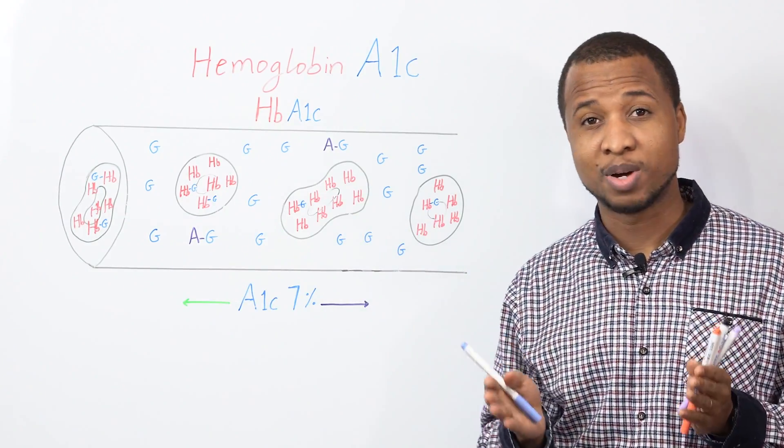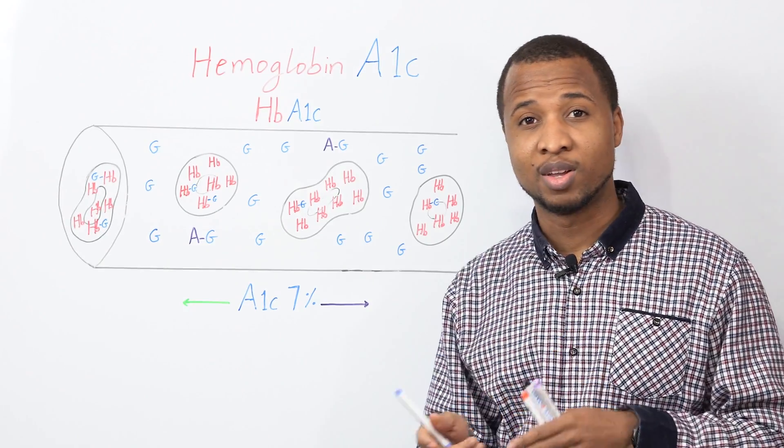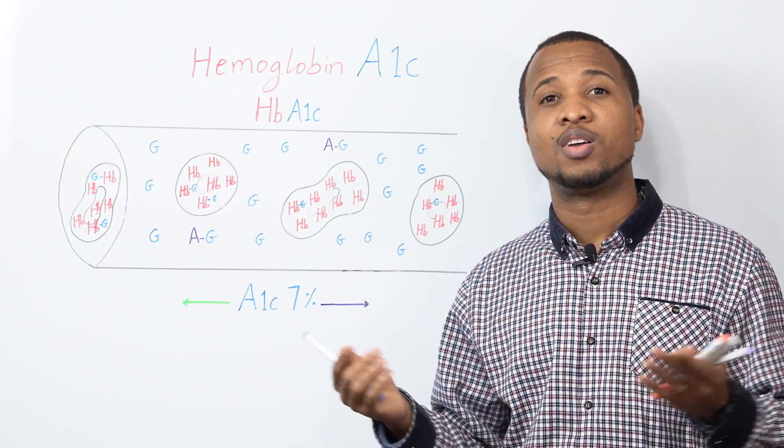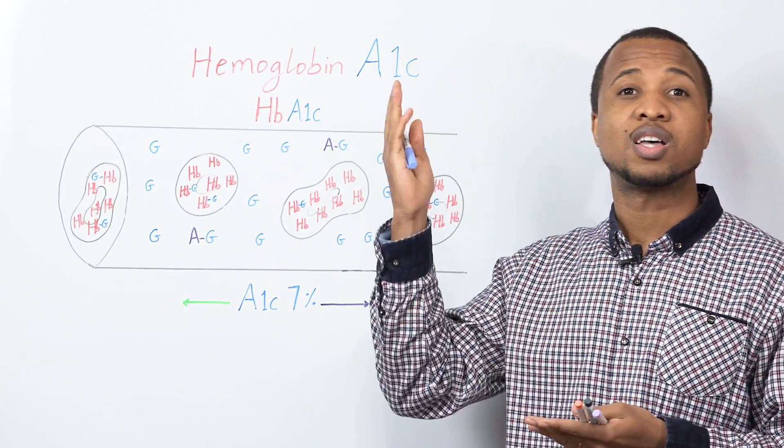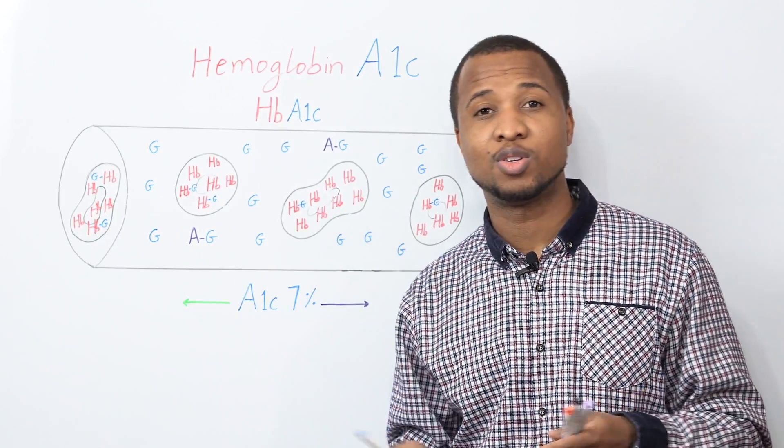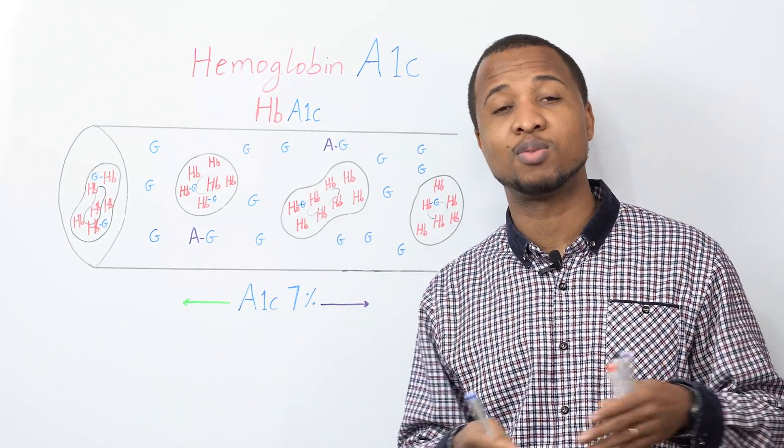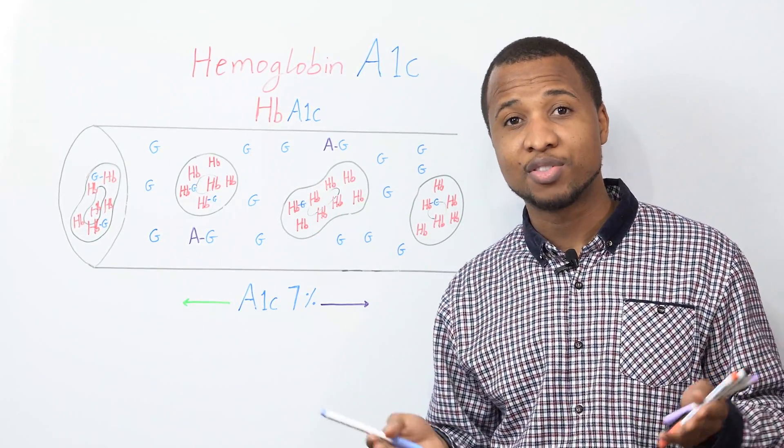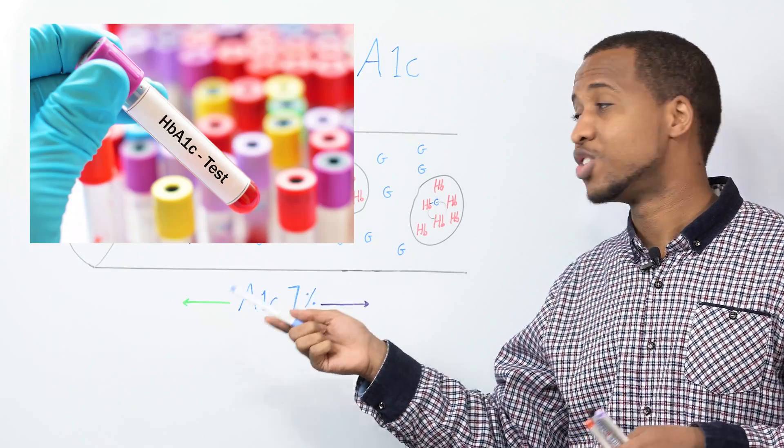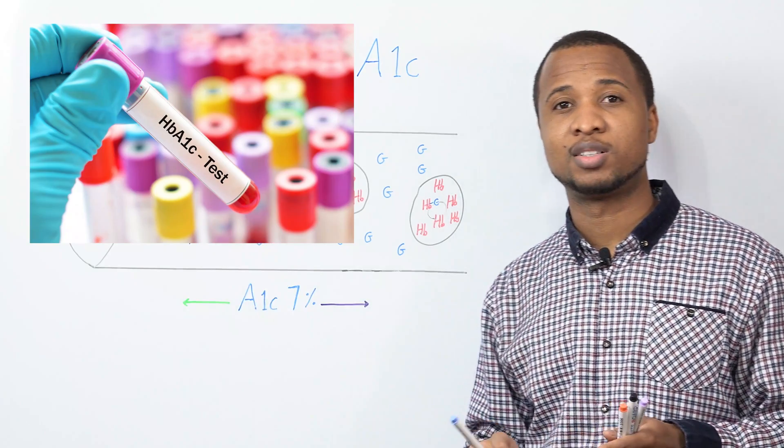For example, when you measure the glucose that is here, if you eat too much, it goes up. You don't eat, it goes down. You didn't sleep well, it goes up. You are stressed, it goes up. There are a lot of things that can influence your blood glucose, but does not affect HbA1c that much.